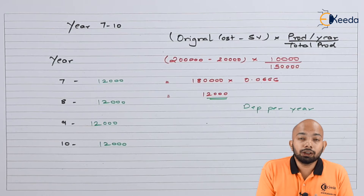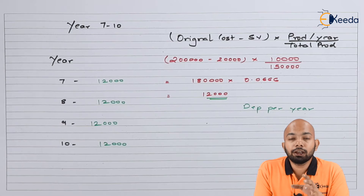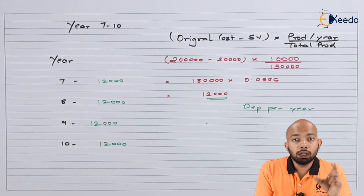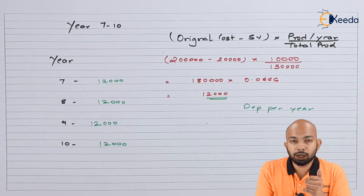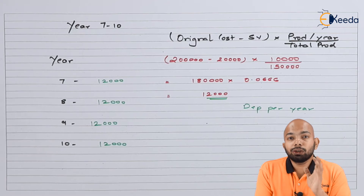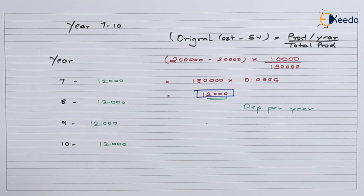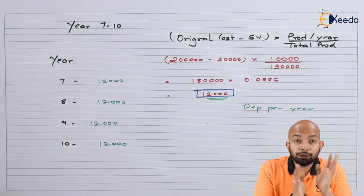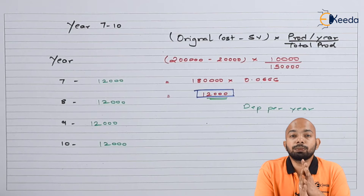For years 7 to 10: using the same formula — original cost minus scrap value multiplied by production units per year upon total production — we get Rs 2,00,000 minus Rs 20,000 = Rs 1,80,000, multiplied by 10,000 divided by 1,50,000. This gives a depreciation of Rs 12,000 per year. Make sure rounding off is done correctly to make calculation easier.